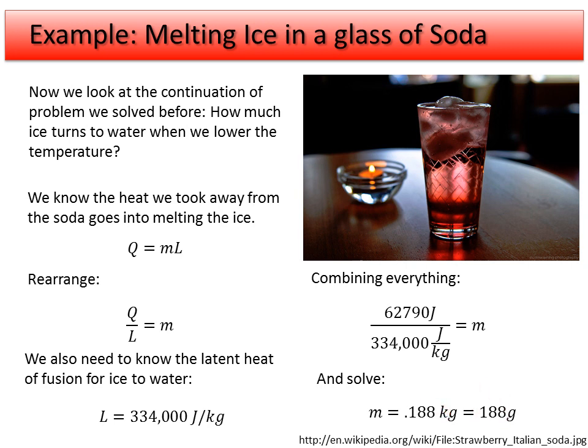So it's not a lot of ice — that's probably around 200 cubic centimeters of ice. Say an ice cube is about 10 grams per ice cube; we're melting somewhere around 10 ice cubes to lower the temperature, which seems pretty reasonable.